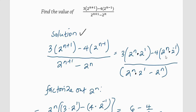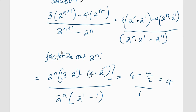I can see that 2^n is common in both the numerator and denominator. So I factorize out 2^n. The numerator becomes 2^n × [3 × 2^1 - 4 × 2^(-1)], and the denominator is 2^n × [2^1 - 1]. We can then cancel 2^n from both numerator and denominator.